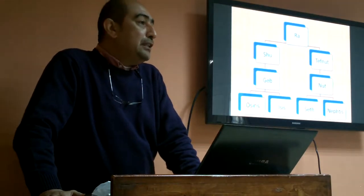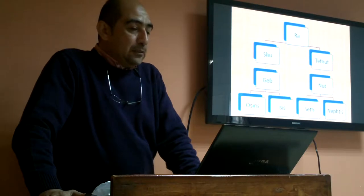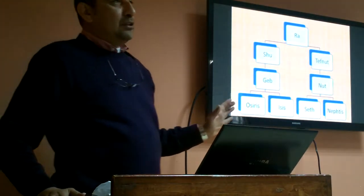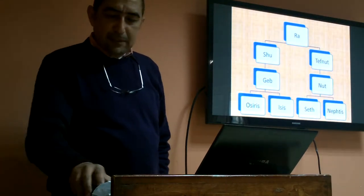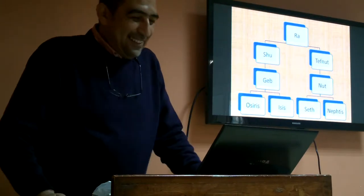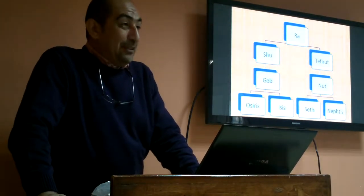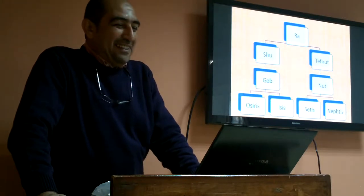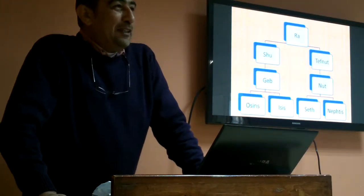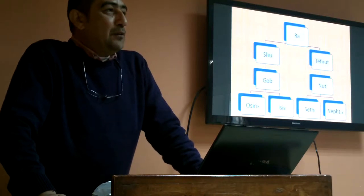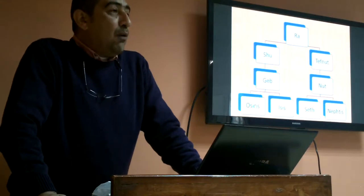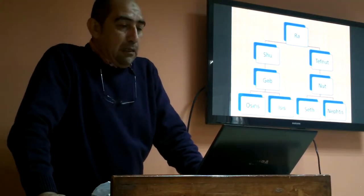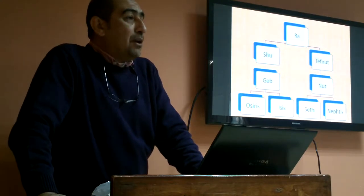To understand the concept of love in Ancient Egypt, we need to go back into the mythology of Ancient Egypt. This chart gives us an idea about the beginning of creation in Ancient Egypt — they believed that Ra, the sun god, was the creator, and from the god Ra we had two other gods.